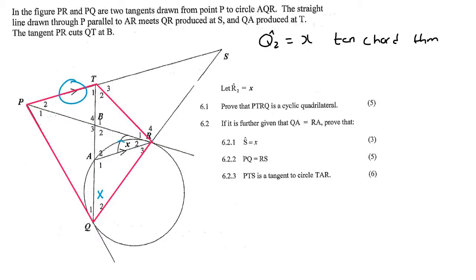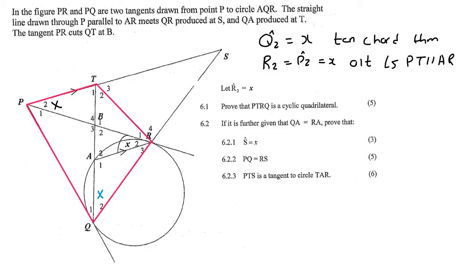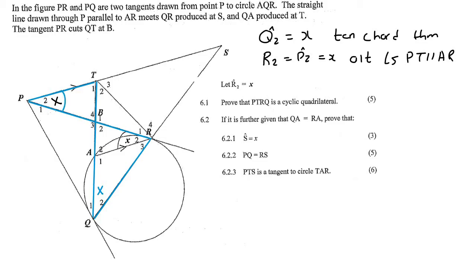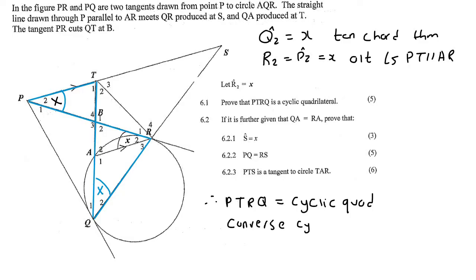Now look at the parallel lines — there is an alternating angle, which means this angle must be the same as this angle. So we can say angle R2 is equal to angle P2, and both are equal to x, because of alternating angles and because line PT is parallel to AR. In that pink cyclic quadrilateral we can now see a bow tie happening where those two angles are the same. Therefore PTRQ is a cyclic quadrilateral — the reason is the converse of angles in the same segment.